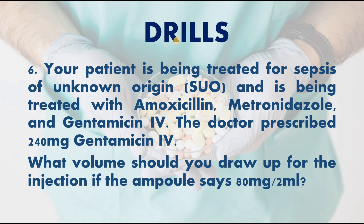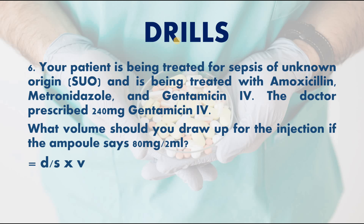Next: your patient is being treated for sepsis of unknown origin and is prescribed amoxicillin, metronidazole, and gentamicin IV. The doctor prescribed 240 milligrams gentamicin IV. What volume should you draw up if the ampoule says 80 milligrams per 2 mils? Using the formula: 240 mg ÷ 80 mg × 2 mils = 6 mils.